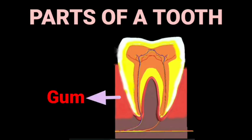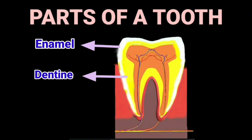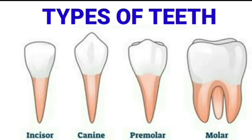In the structure of a tooth, the hard white outer covering is called the enamel. Enamel is the hardest part of our body. There is another layer below the enamel called the dentine. Below the dentine lies the pulp. Pulp is the soft part of the tooth. It has blood vessels and nerves inside which are connected to the gums.